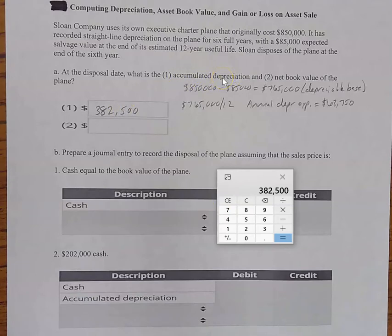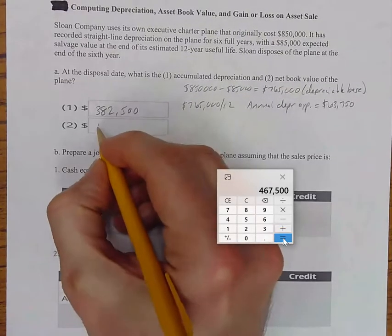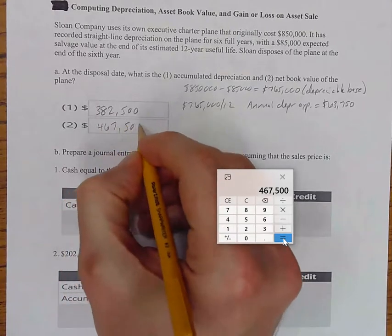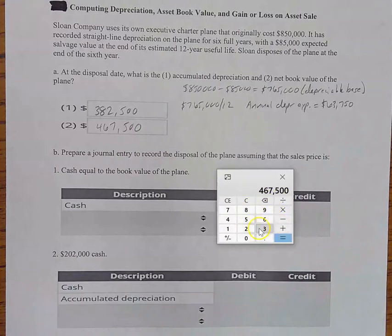Accumulated depreciation is our adjustment account. We cannot mess with the historical cost of $850,000 over on the balance sheet for this plane. But we can use a contra asset account called accumulated depreciation to get to what we call the book value. And so how do we get book value? It is historical cost minus the accumulated depreciation taken up to that point, which in this case is $382,500. So the answer to number two is what we see on the screen. So $467,500 plus $382,500. I'm just proofing my answer right now. It gets us back to the original $850,000. So these are the two answers that we need.